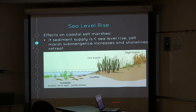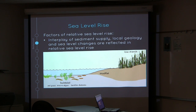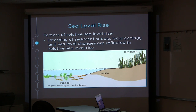However, if sediment supply is less than sea level rise, the marsh will be covered by mud-flat sediments, submerged, and the shoreline will retreat. Relative sea level rise refers to sea level changes local to that coast, whereas eustatic sea level change is more global. Factors that interplay in relative sea level rise include sediment supply, local geology, and eustatic sea level change.